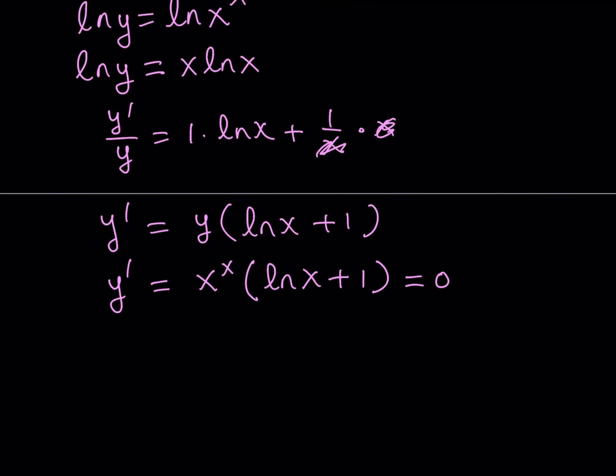So by setting the derivative equal to 0, we can look for points at which the tangent line is horizontal. Remember, we just talked about tangent lines in a previous video. But when does a function have a horizontal tangent line? At the max and min points, right? So we can just set this equal to 0. Obviously, x to the power of x is not going to be 0. And don't say 0 to the power of 0 is equal to 0, because it's not, right? As you know.